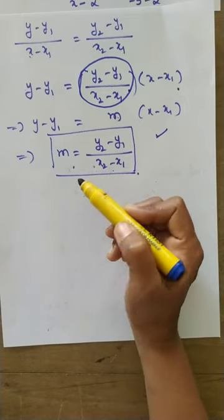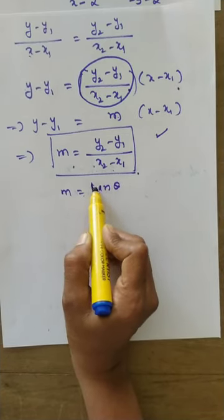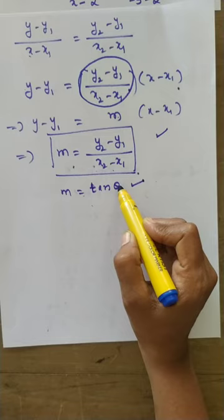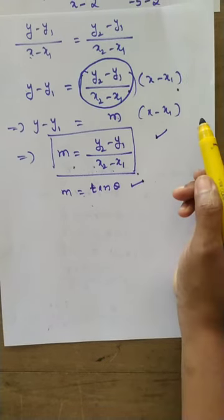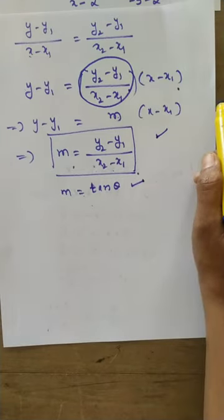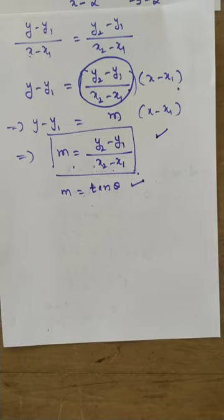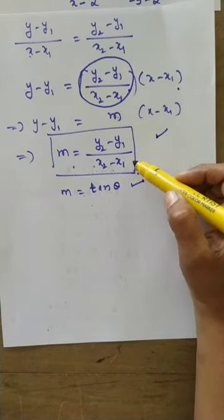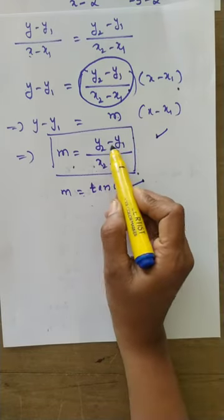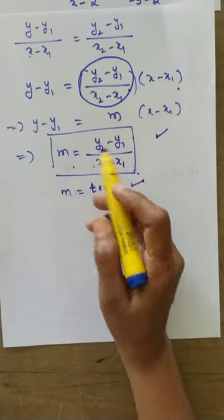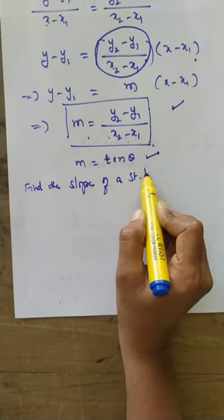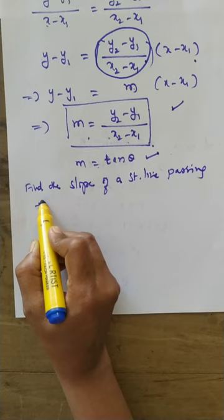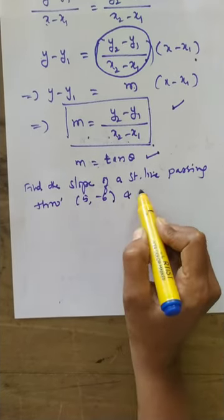The first formula for slope is m equals tan theta — use this whenever angle is given. The second formula is m equals y2 minus y1 by x2 minus x1 — use this whenever a line passing through two points is given. For example: find the slope of a straight line passing through (5, -6) and (-5, 6).